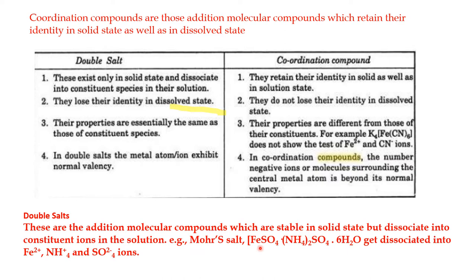Take the example of Mohr's salt. In Mohr's salt we have iron, sulphate ion, and ammonia molecules. If we dissolve Mohr's salt in water, it shows the property of Fe2+ ion, ammonium ion, and sulphate ion. But if we make a coordination compound between iron and ammonia molecules, it will neither show the property of iron nor the property of ammonia molecules. The major difference between a double salt and a coordination compound is listed here.